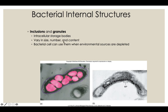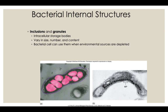Sometimes you'll find storage structures inside bacterial cells called inclusions or granules. When the environment goes bad or a nutrient source becomes scarce — like iron, zinc, or magnesium — bacteria will gorge and store the excess as metallic inclusions. These can be seen under a microscope. When environmental sources run out, bacteria deplete these stored granules to get the nutrients they require for metabolism.